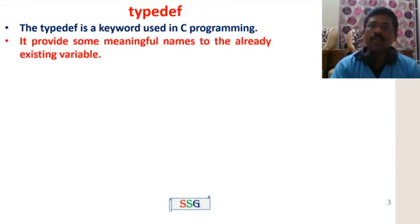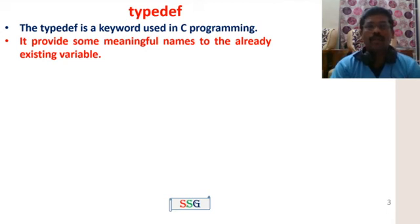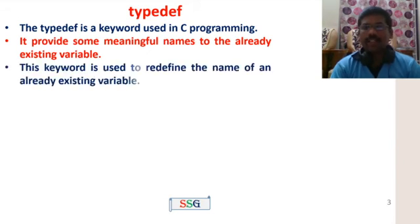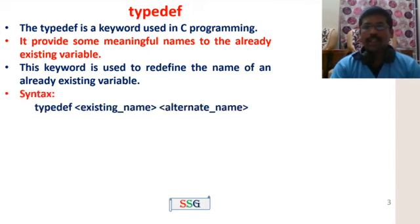In C programming, typedef is a keyword. It is used with data types such as int, unsigned, and others. Typedef provides alternate names to already existing data types or variables. This keyword is used to redefine the name of an already existing variable or data type.